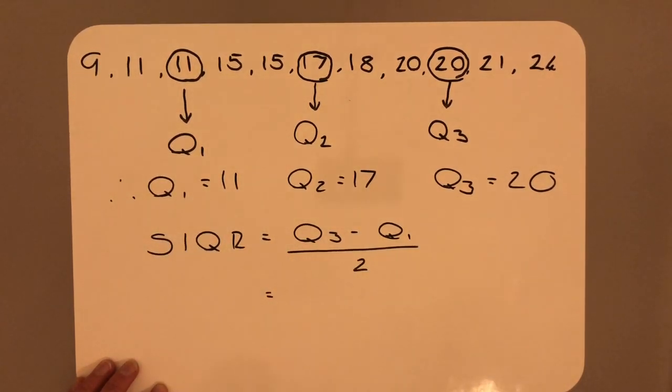Using our data from the quartiles, we substitute in 20 subtract 11, all divided by 2. Simplifying down, 20 subtract 11 leaves me 9, over 2, or 4.5. SIQR.